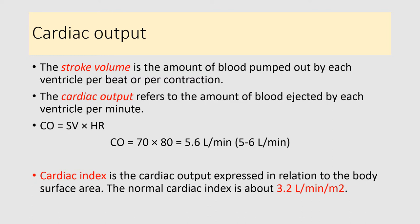Stroke volume is 70 ml. End diastolic volume is the volume remaining inside the ventricle at the end of diastole, and end systolic volume is the volume of blood remaining in the ventricle at the end of systole. So stroke volume equals end diastolic volume minus end systolic volume. Normally end diastolic volume is 130 ml and end systolic volume is about 50 ml, so stroke volume is about 70 to 80 ml.